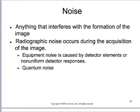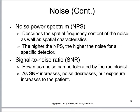Anything that interferes with the formation of an image is referred to as noise. Noise is not good — noise is the enemy. This can happen during image acquisition if equipment is malfunctioning or if we don't have sufficient technique. In radiation therapy, quantum noise is seldom the issue; very often the noise results from the equipment itself. Two things helpful for measuring noise are the noise power spectrum, which describes the spatial frequency content of the noise, and the signal-to-noise ratio, which means how much noise can be tolerated by a given viewer of the image.